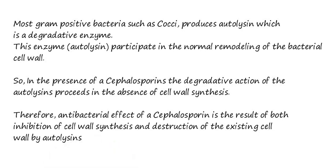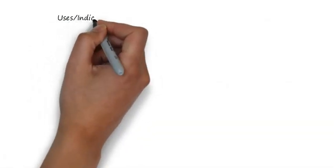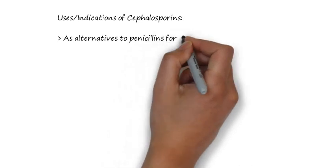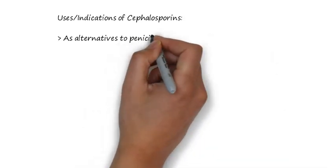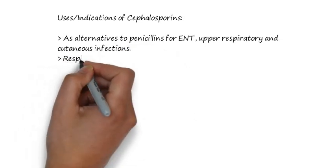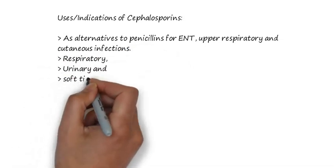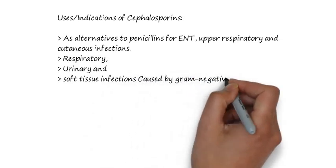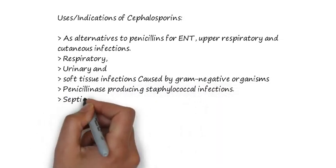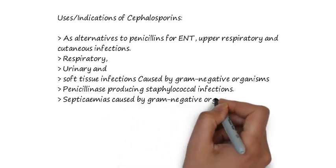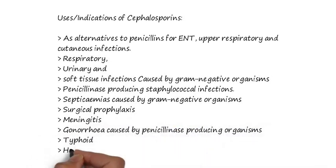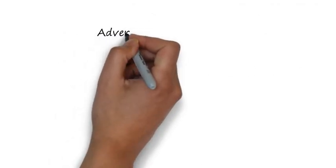The uses and indications of cephalosporins include use as an alternative to penicillin, upper respiratory tract infections, cutaneous infections, lower respiratory, urinary, and soft tissue infections caused by gram-negative organisms, penicillinase-producing staphylococcus infections, septicemia caused by gram-negative organisms, surgical prophylaxis, meningitis, and gonorrhea caused by penicillinase-producing organisms, as well as hospital-acquired infections.